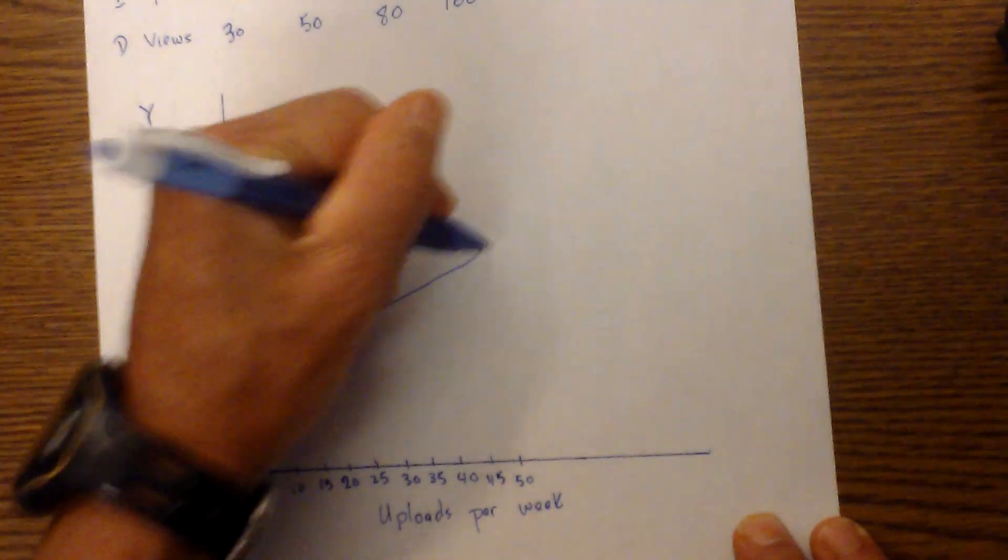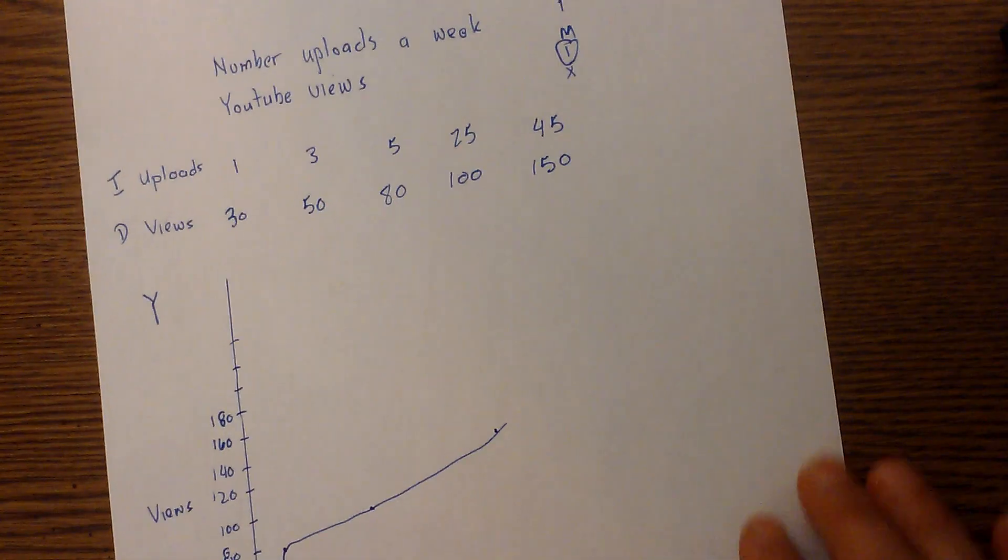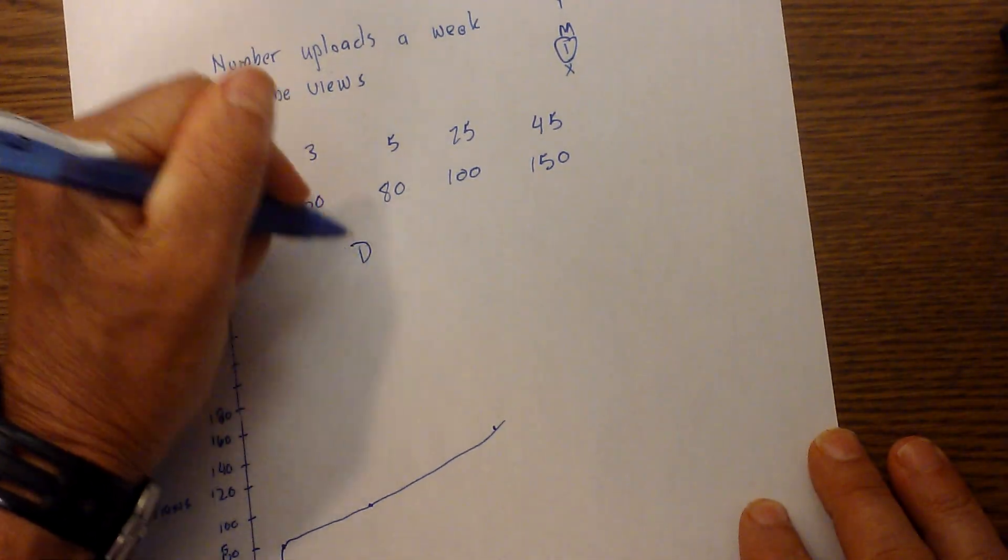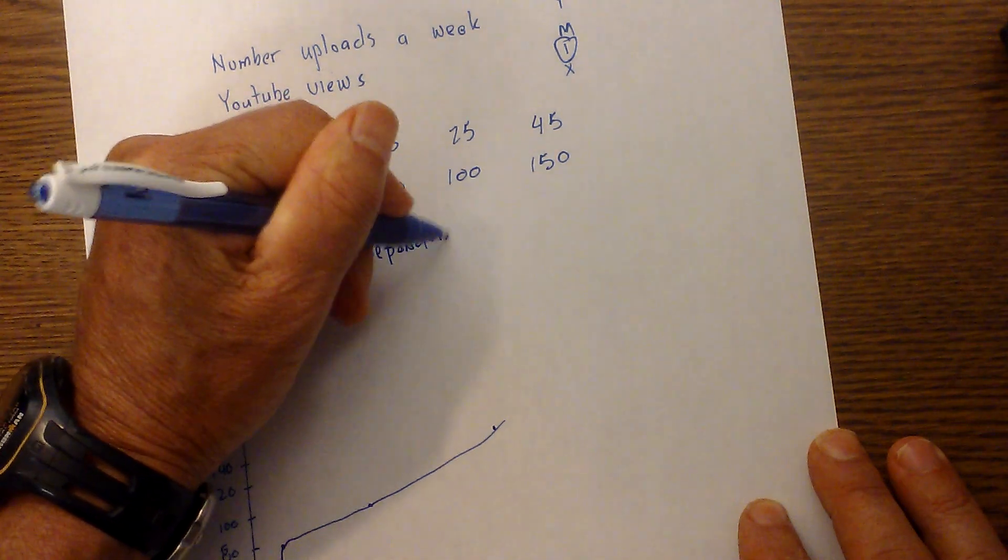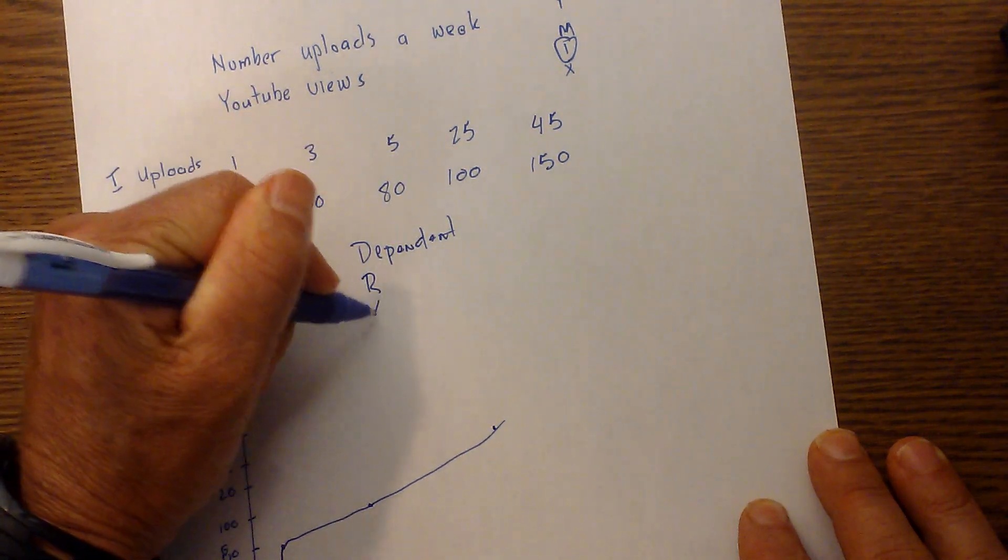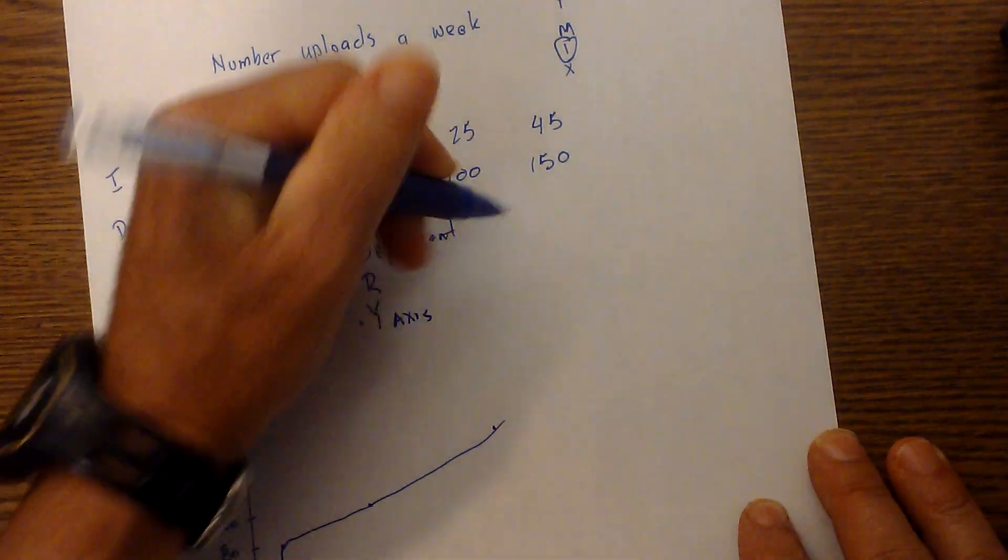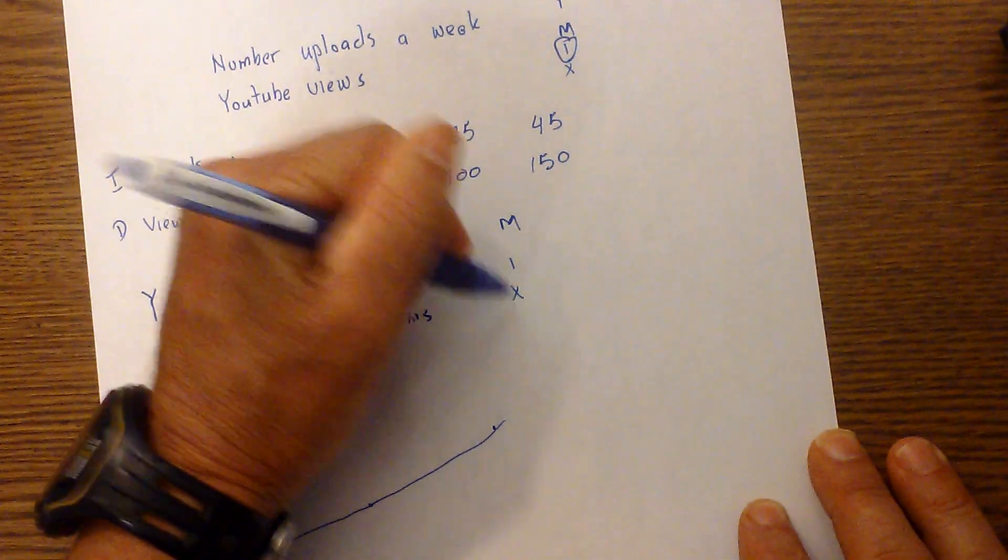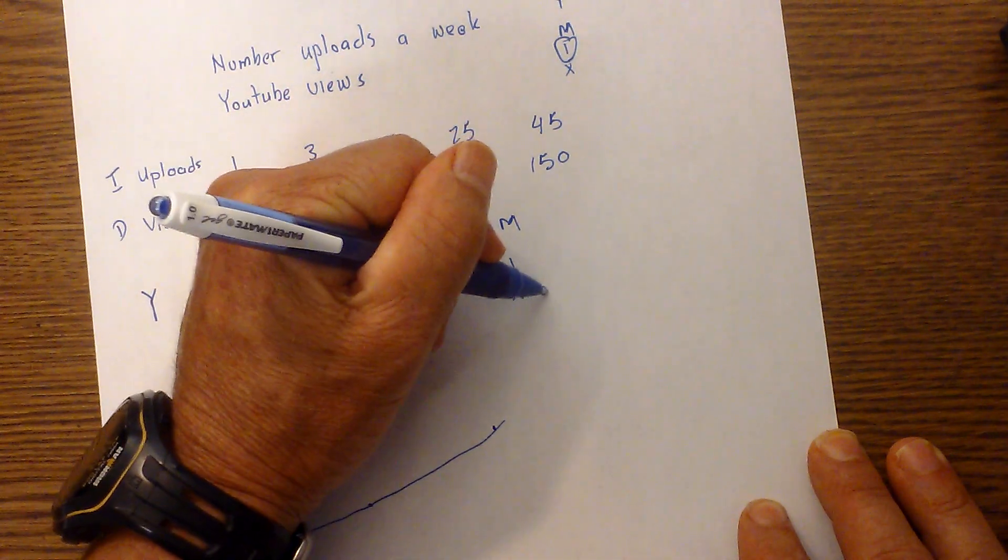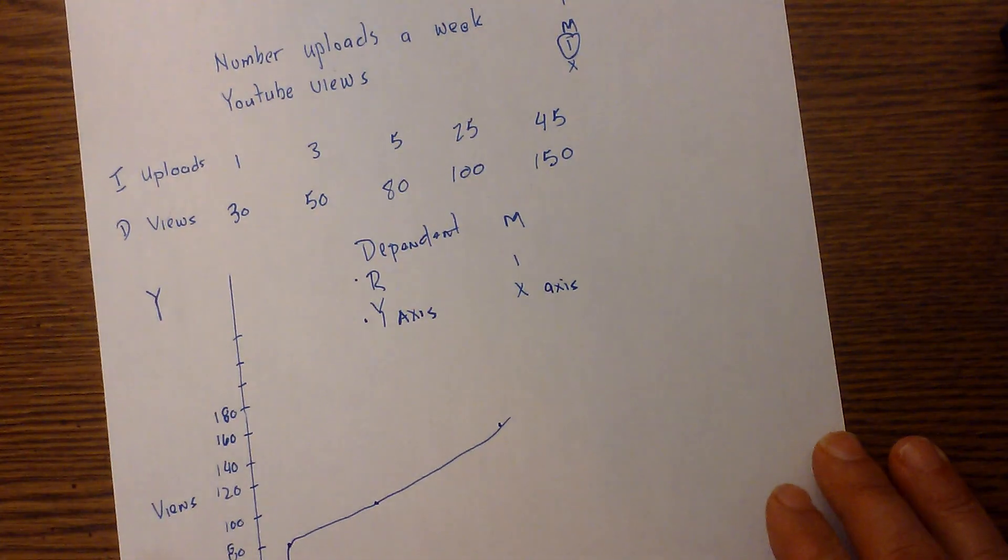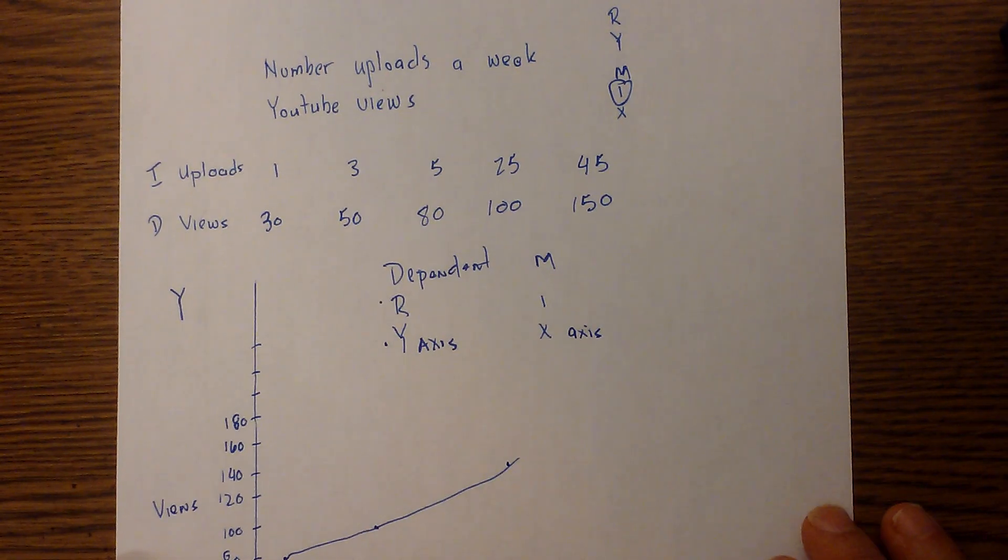In review, you have DRY MIX: the D stands for Dependent, the R is Responding, the Y is the Y-axis, and then the MIX is M for Manipulated, I is Independent, and the X is axis. Hope that helps with graphing variables.